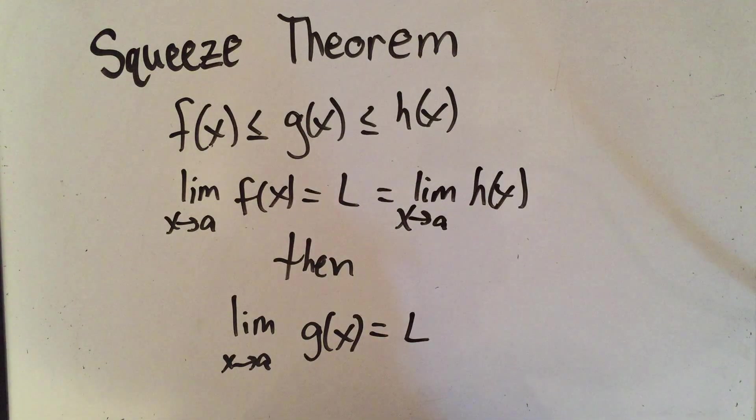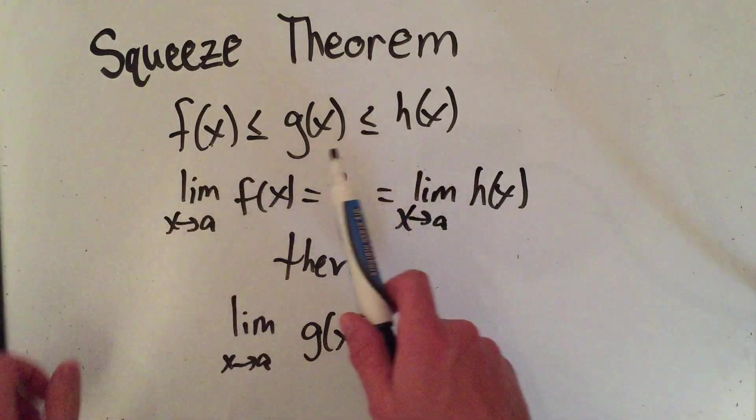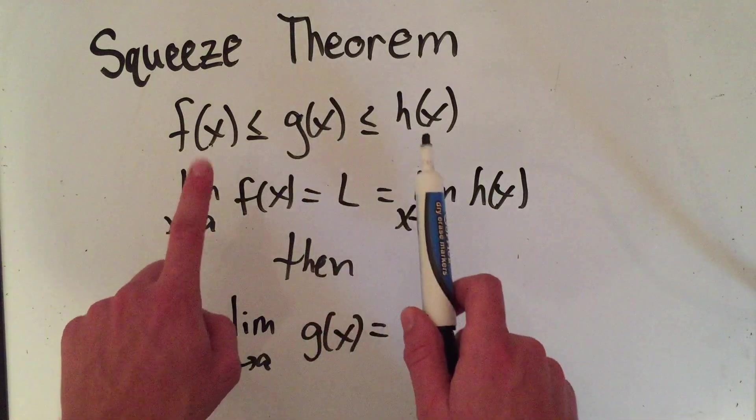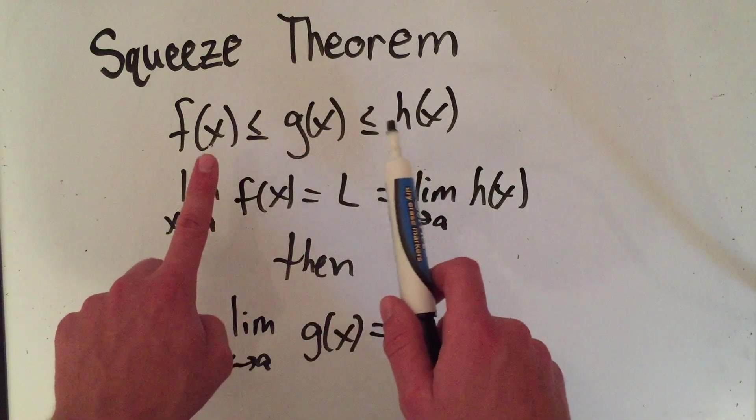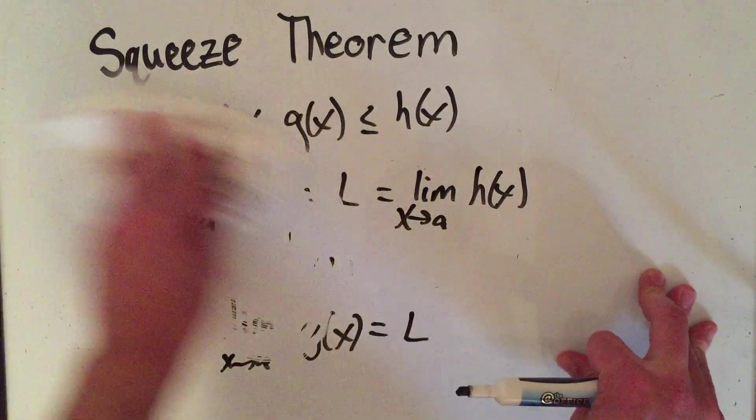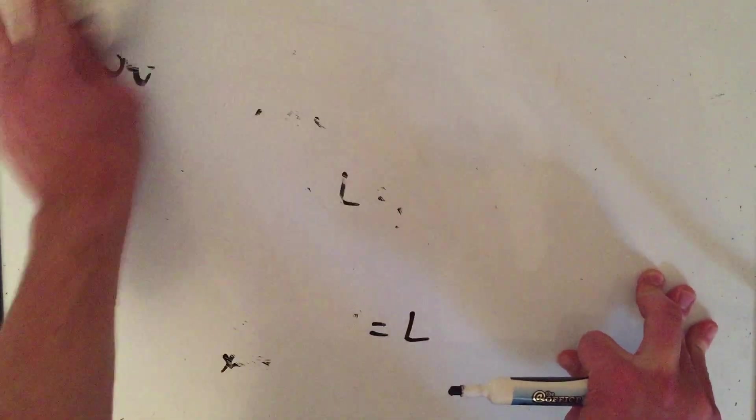then the limit as x approaches a of g of x also equals the same limit. That might look confusing, but all it really means is if you bound a function by the same limit on both sides, it has to be that limit as well. Let me give you an example.